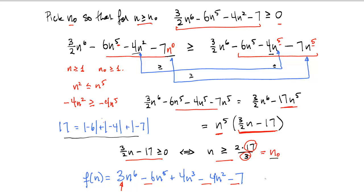A proof goes in the reverse direction: it starts with the assumption that n ≥ 2×17/3, then follows each of these steps in reverse, ending with the inequality that f(n) ≥ 3/2·n⁶ for all n ≥ n₀.